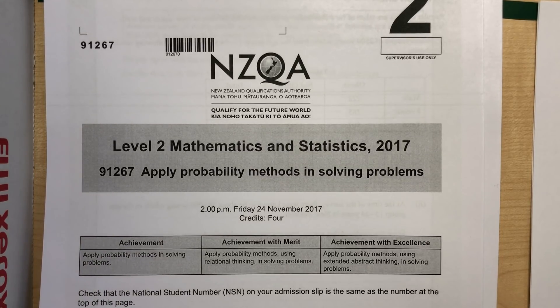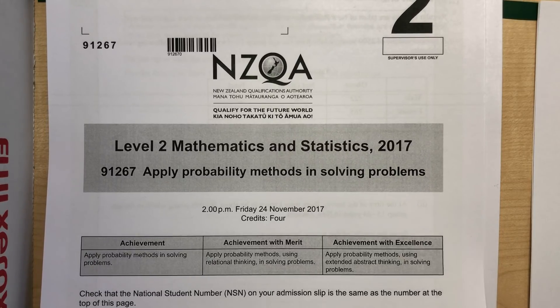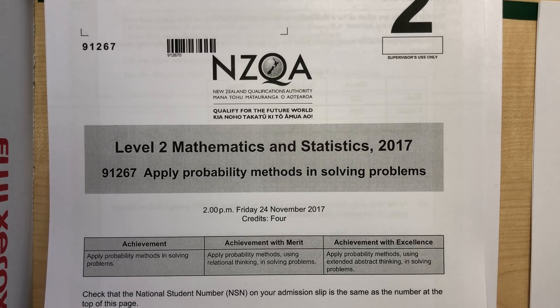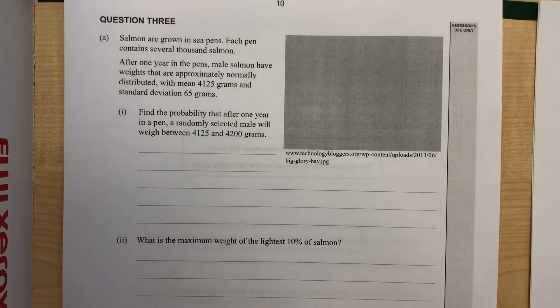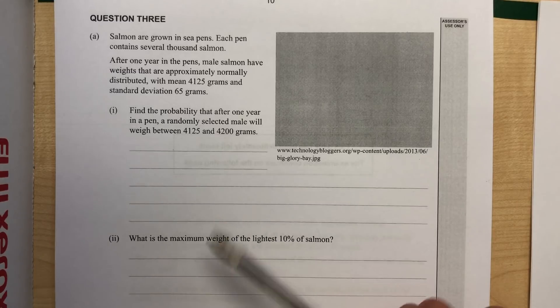So this is the worked solutions for the 2017 paper for level 2 probability, the external that's 91267. This one is for question 3 and I'm just going to do the first two parts in this one.